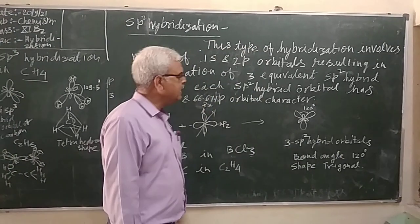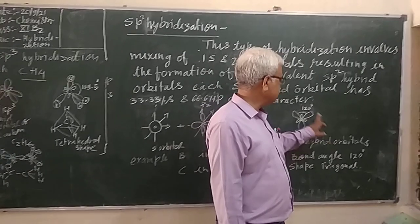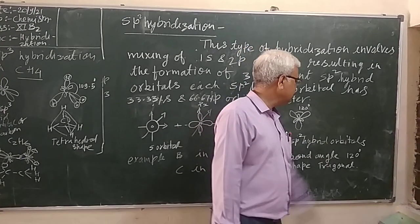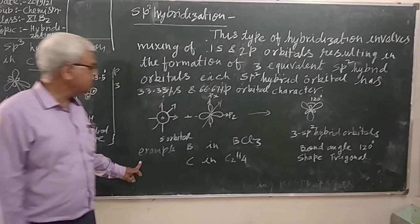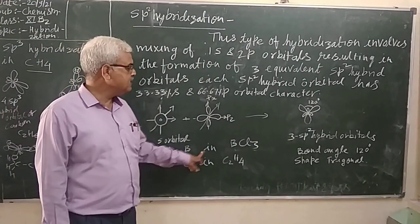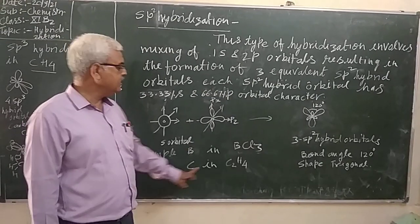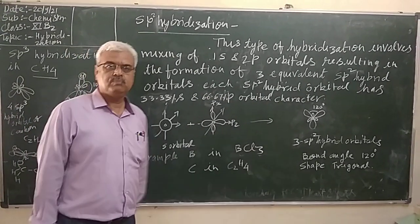The bond angle between these hybrid orbitals is 120 degrees and the shape is trigonal. For example, boron in BCl3 and carbon in C2H4.